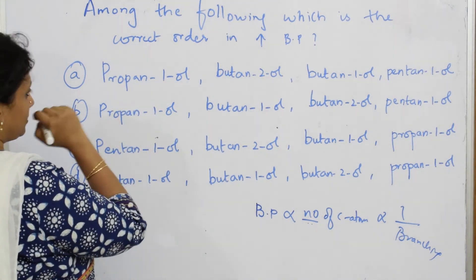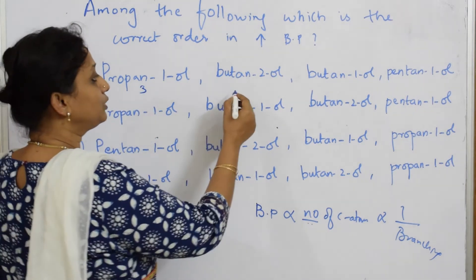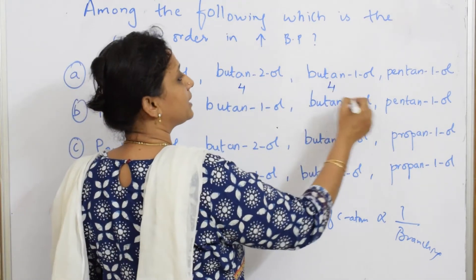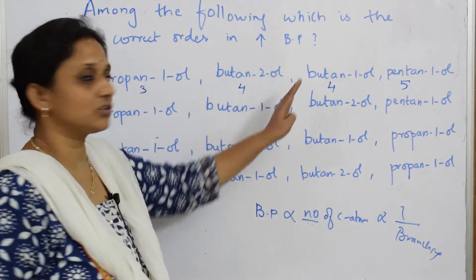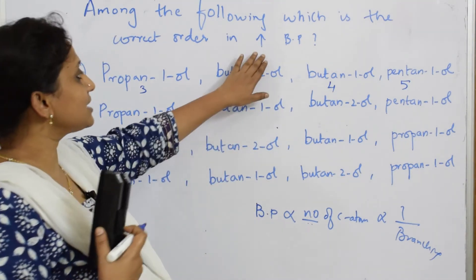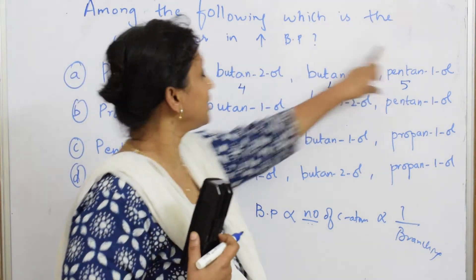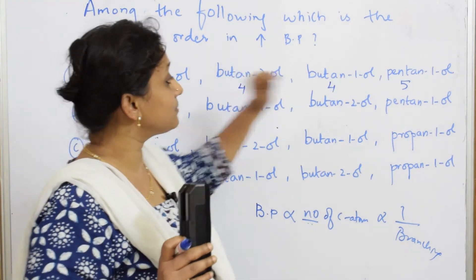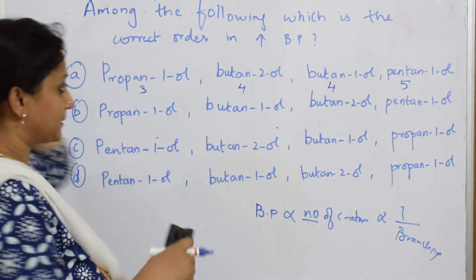Now, propanol has 3 carbon atoms. Butanol has 4 carbon atoms. Butanol has 4 carbon atoms. Pentanol has 5 carbon atoms. What did they ask? I have to arrange in increasing order. Most students, when they see increasing order, write the least here and maximum here — that's a mistake. Increasing order means maximum should be at the end, minimum should be at the start. Remember that.